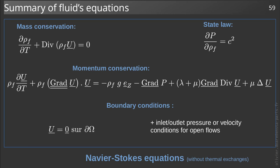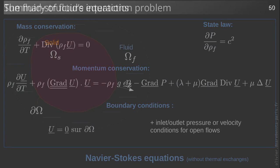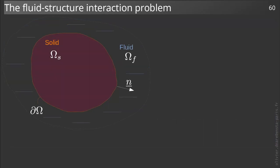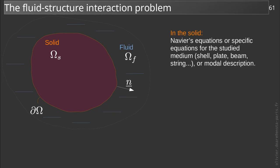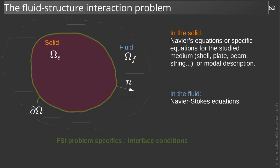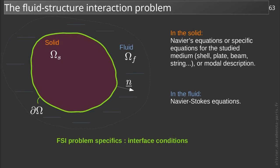Let us now return to the problem coupling the fluid and a solid. In both domains, the equations we have just presented remain valid. Thus, in the solid, we are always dealing with the Navier equations, or with equations taking into account the specificities of the problem. And most of the time, we will be satisfied with the model description of the solid. In the fluid, we will always deal with the Navier-Stokes equations. What will change in our modeling is at the interface between the fluid and the solid.